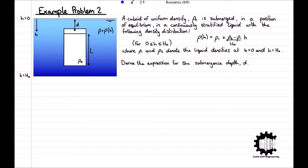The diagram shows a cuboid of uniform density rho_0 that is fully submerged in a position of equilibrium in a continuously stratified liquid. The liquid has a density distribution rho(h) equals rho_1 plus (rho_2 minus rho_1) divided by h_0 times h, for h from 0 to h_0. Here rho_1 and rho_2 denote the densities of the liquid at h equals 0 and h equals h_0 respectively. Derive the expression for the submergence depth d shown in the diagram.